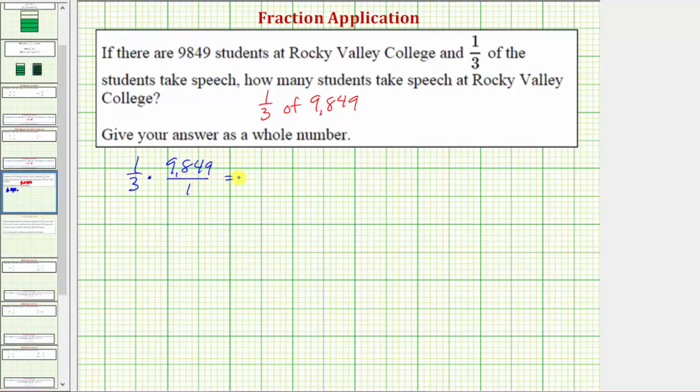And now we know how to multiply fractions. We multiply the numerators and multiply the denominators. One times 9,849 is 9,849, and of course three times one is equal to three.